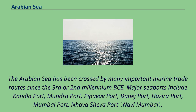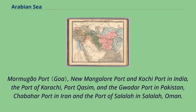The Arabian Sea has been crossed by many important marine trade routes since the 3rd or 2nd millennium BCE. Major seaports include Kandla Port, Mundra Port, Pipavav Port, Hazira Port, Mumbai Port, Nhava Sheva Port, Mormugao Port, New Mangalore Port, and Kochi Port in India; the Port of Karachi, Port Qasim, and Gwadar Port in Pakistan; Chabahar Port in Iran; and the Port of Salalah in Oman.